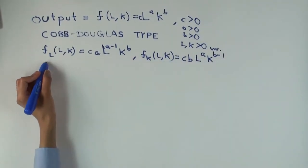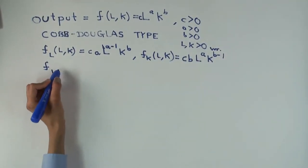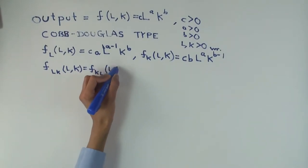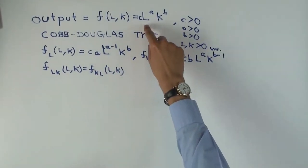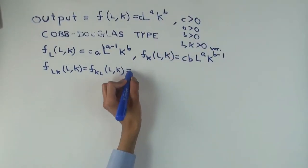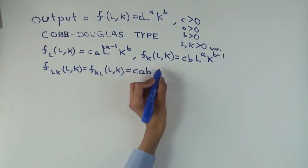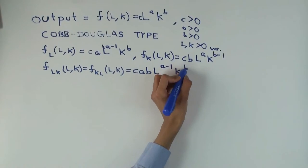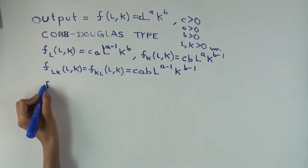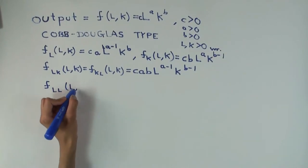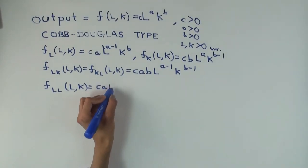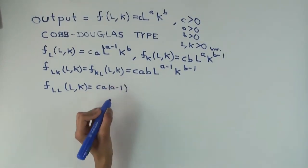What is f sub LK, which is the same as f sub KL? And the general rule, as you remember, is you want to do both differentiations independently. So this part you differentiate with respect to one variable, this part you multiply. So you get c times a times b times L to the a minus one times K to the b minus one. Similarly, f sub LL is c times a times (a minus one) times L to the a minus two times K to the b.